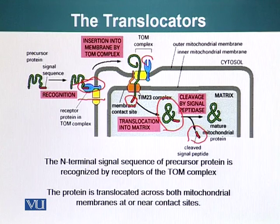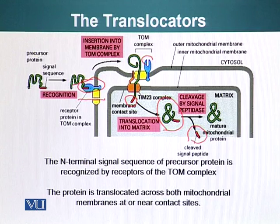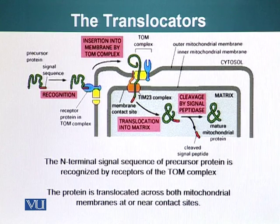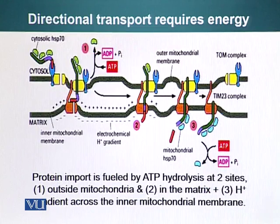We now have a mature protein in the matrix of mitochondria that can perform its function. This is directional transport, and directional transport generally involves cellular energy in the form of ATP or high-energy bonds. Let's look at how that energy requirement is fulfilled.